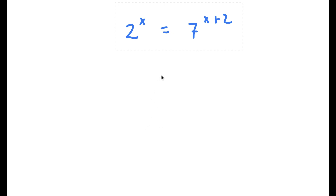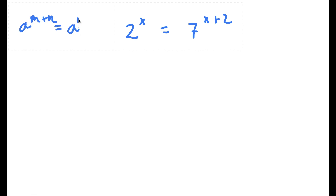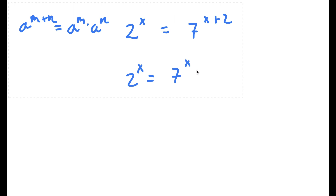So in this problem, I have 2 to the power of x is equal to 7 to the power of x plus 2. If I have something in the form a to the power of m plus n, this is equal to a to the power of m times a to the power of n. So in this case, 7 to the power of x plus 2, I can write as 7 to the power of x times 7 to the power of 2.